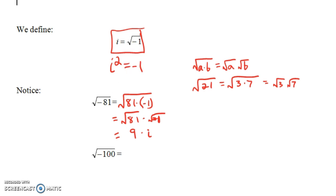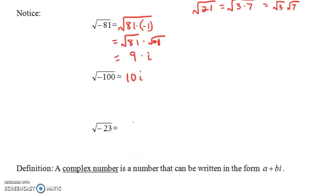Now, what would be the square root of negative 100? It turns out it would be 10i. What about the square root of negative 23? Well, 23 is not a perfect square, so we just write it as the square root of 23 times i. Note that the i is not underneath the square root symbol — it's just the square root of 23 times i.